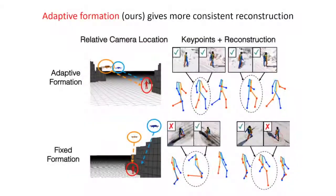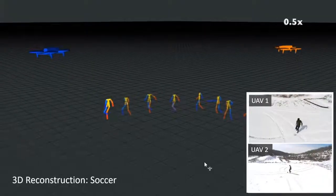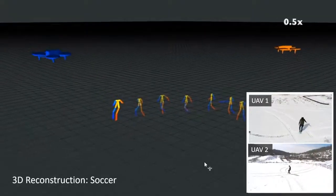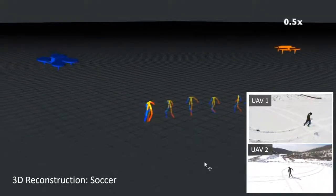By staying at a low tilt angle, our adaptive formation gives more consistent reconstruction. Here is our system reconstructing a highly dynamic target playing soccer.